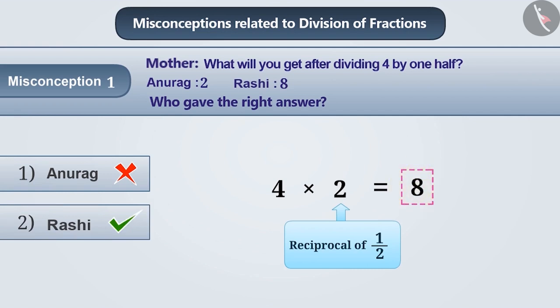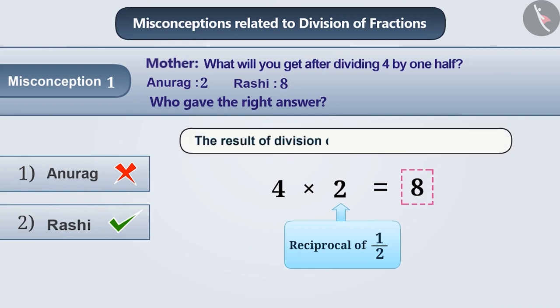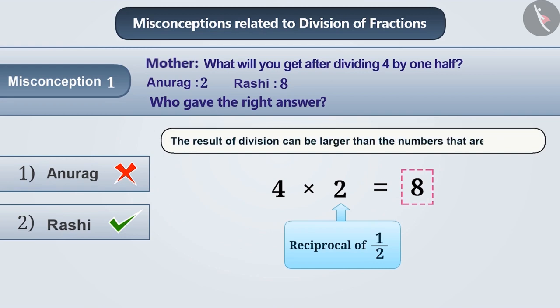Many times, children are able to find the right answer 8, but in spite of that, they consider it wrong because they assume that the result of division can never be a larger number. This is also a misconception. Keep in mind, the result of division can be larger than the numbers that are divided.